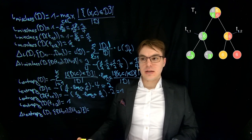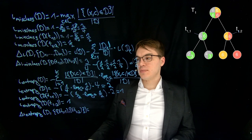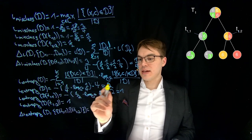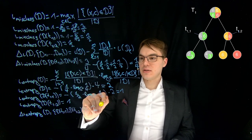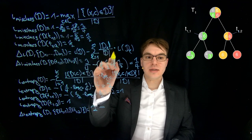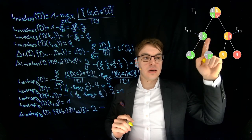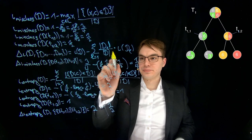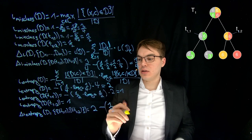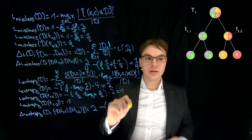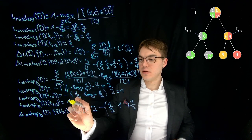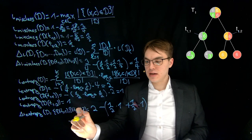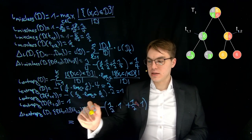Now let's compute the entropy impurity reduction, delta J entropy. It's computed the same way as before: we take the total entropy of two, minus the sum of the weighted sub-dataset entropies. Half the samples go to the left subtree times entropy of one, plus the other half times entropy of one. The final result is two minus one, which equals one.